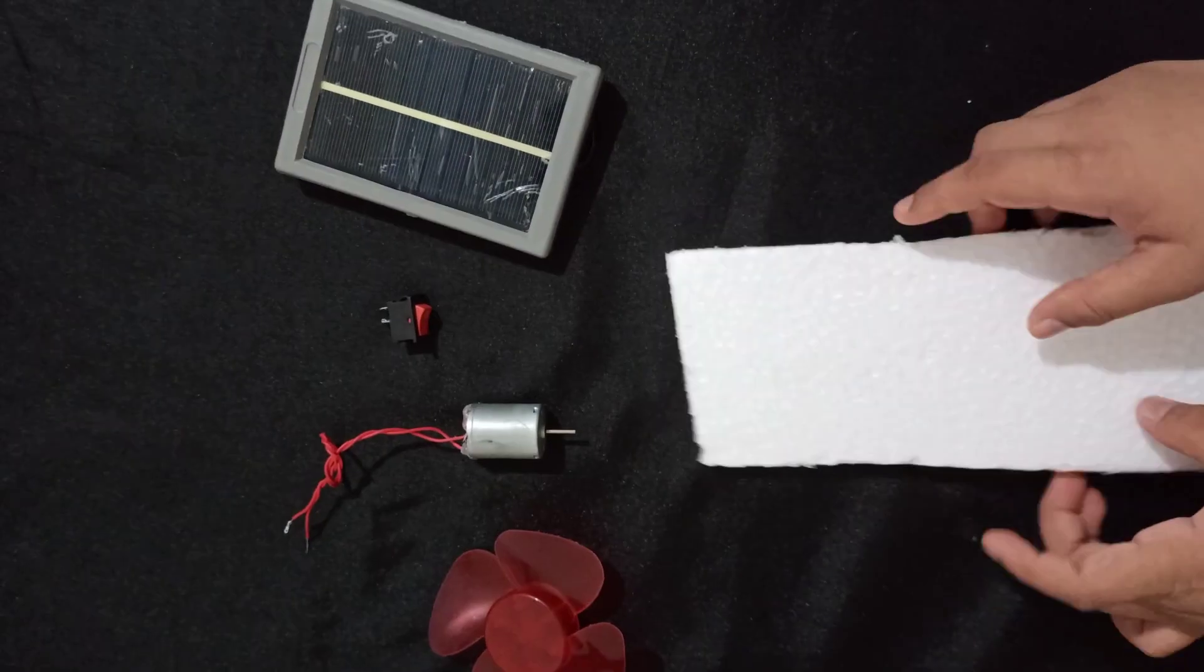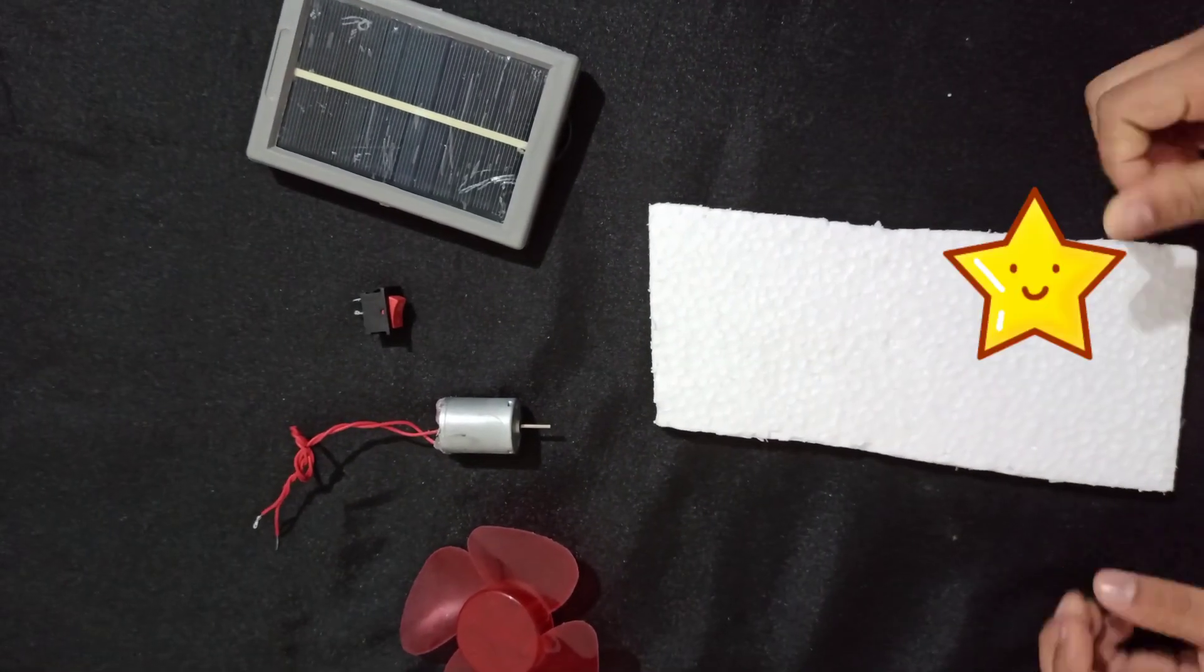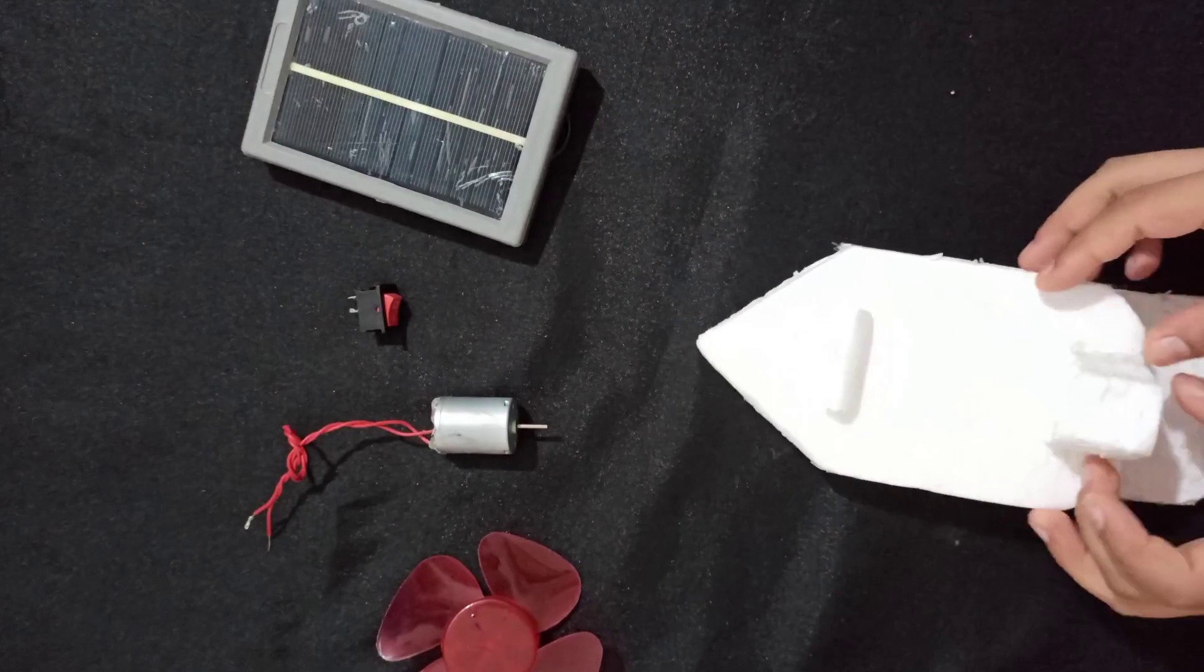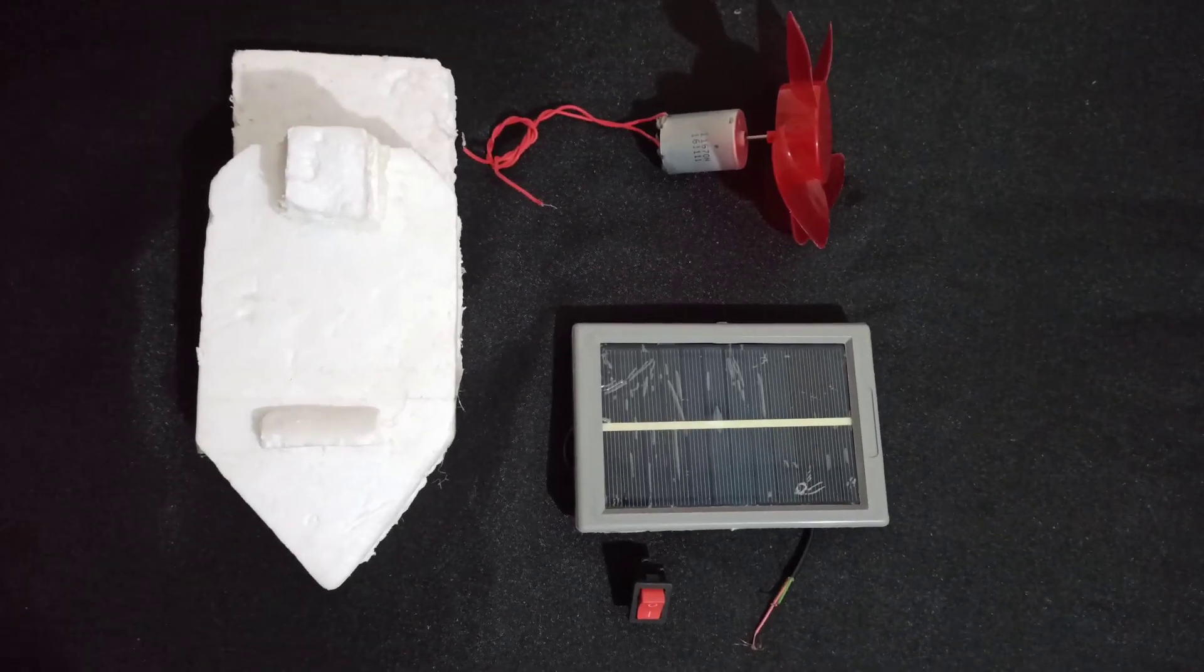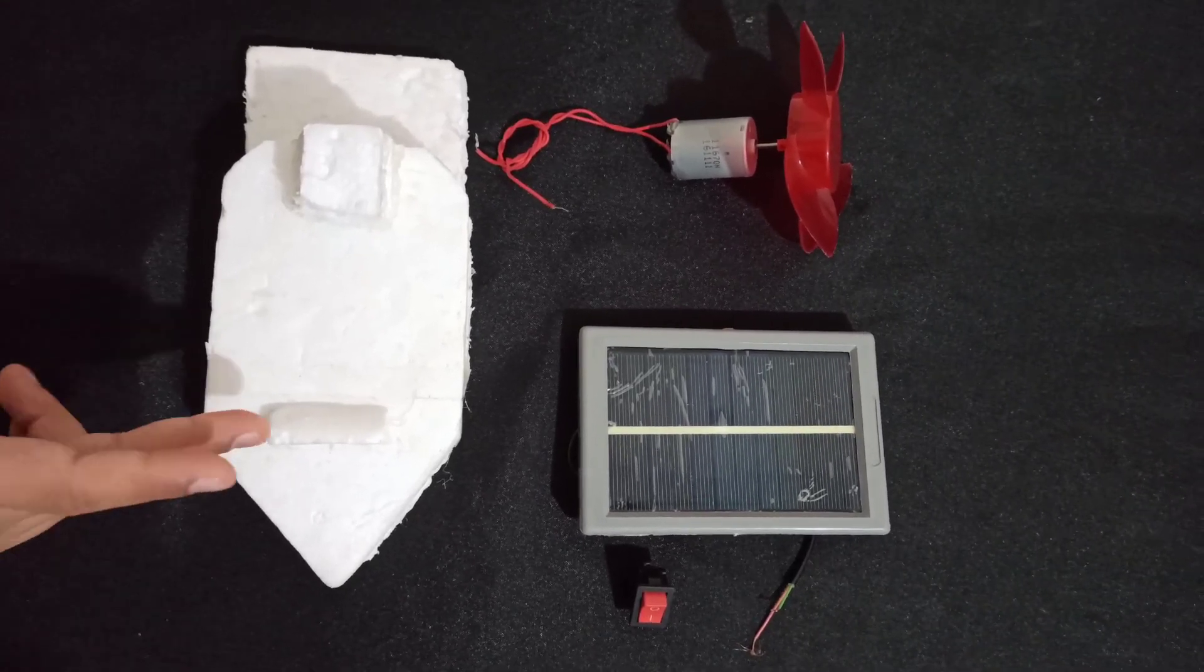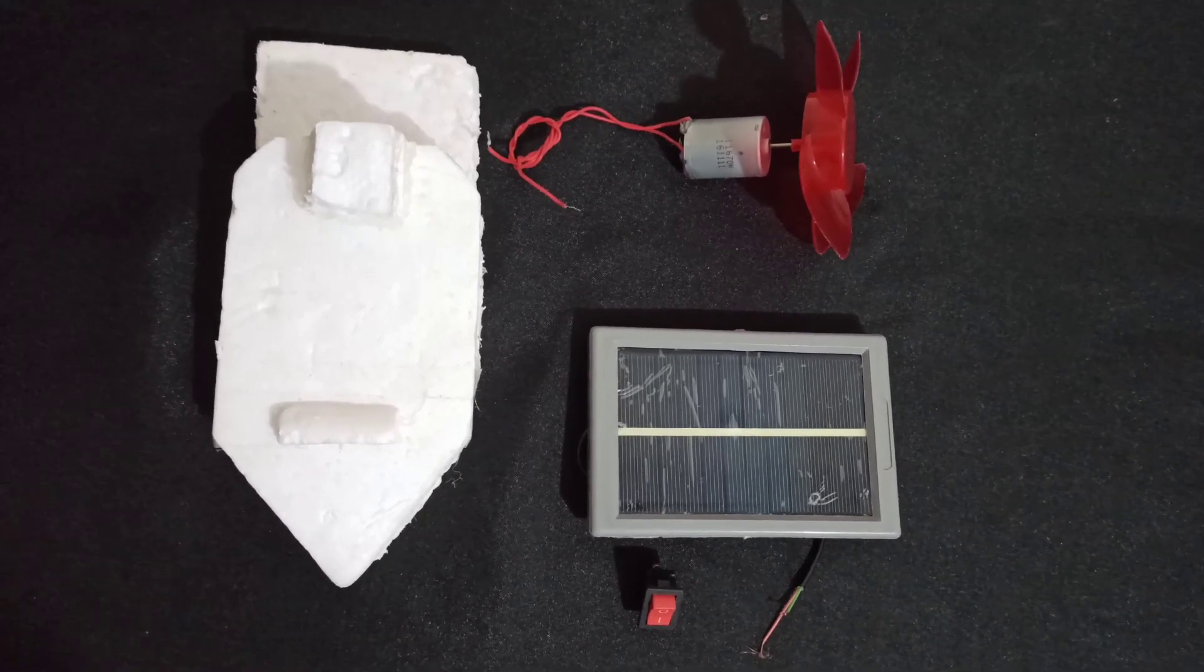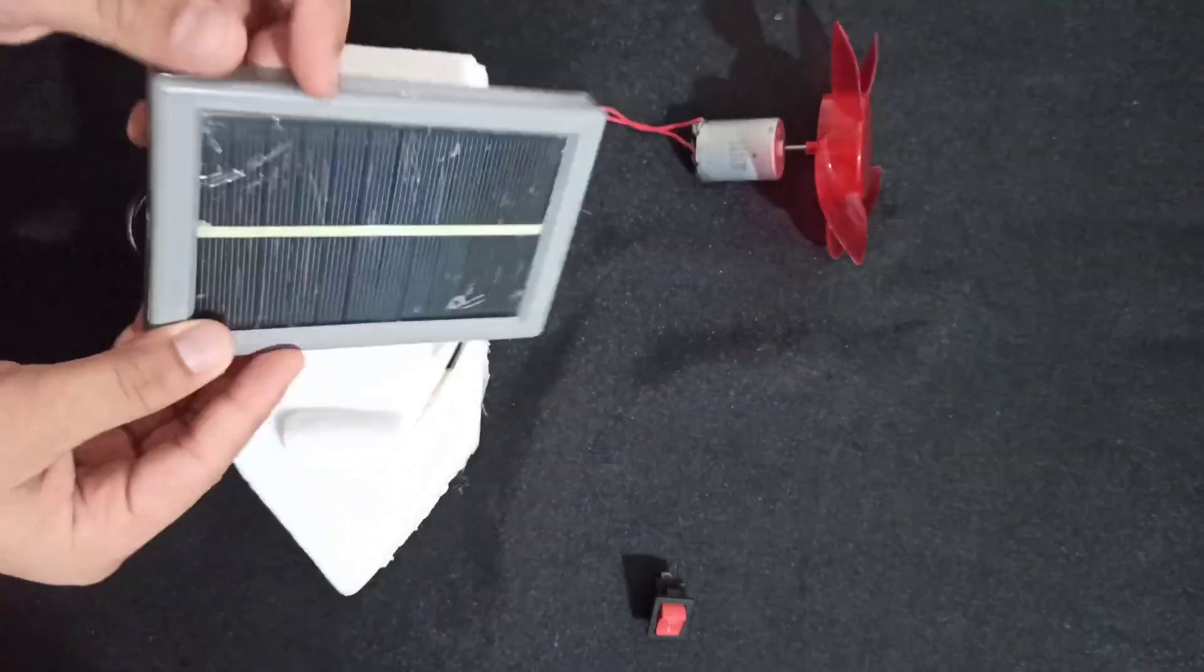Here's how you make it. First, take your styrofoam piece and cut it into a boat shape. Then it should look like this. I have made three changes. The first change is a stopper so that our solar panel won't fall.